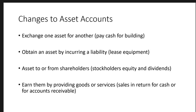Second, we could obtain an asset by incurring a liability — assets go up and liabilities go up by the same amount. For example, we buy something on credit or lease equipment: we get the equipment as an asset, and we owe the full amount to the lender. Third, stockholders could give us cash or other assets, or we could give them cash in the form of dividends. That's more rare — dividends happen a couple times a year, not on an everyday basis.